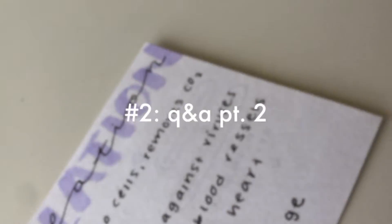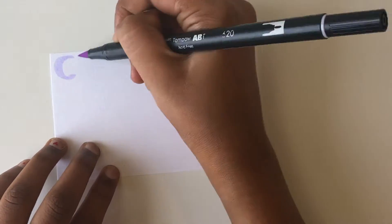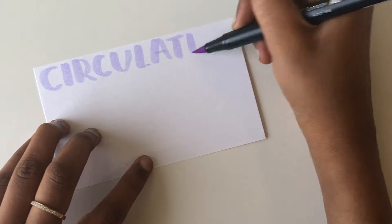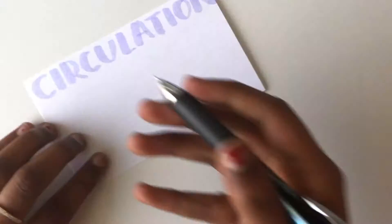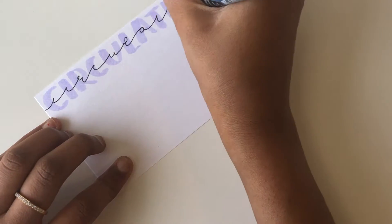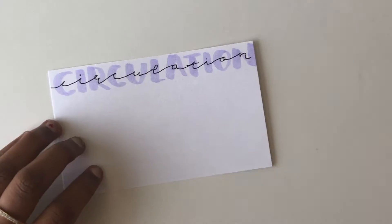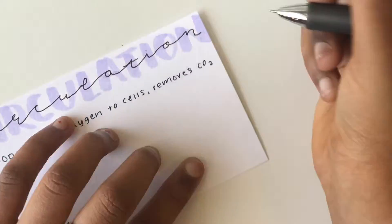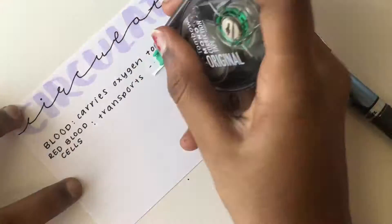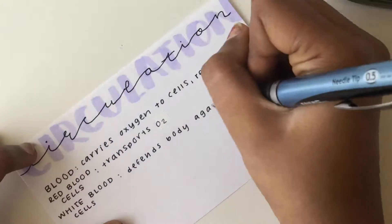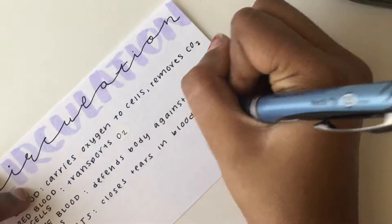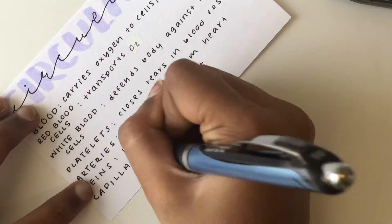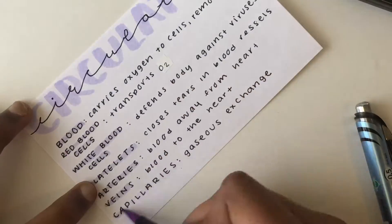The next type of flash cards are called Q&A part two. You're going to start off by writing a header which is going to be your main topic, and below that you're going to be writing down important vocab terms with its definition which should correspond to that main topic. This is very similar to the previous one except you're writing down all your vocab terms in one flash card, which is a really great way to organize all your terms and keep them in one place.